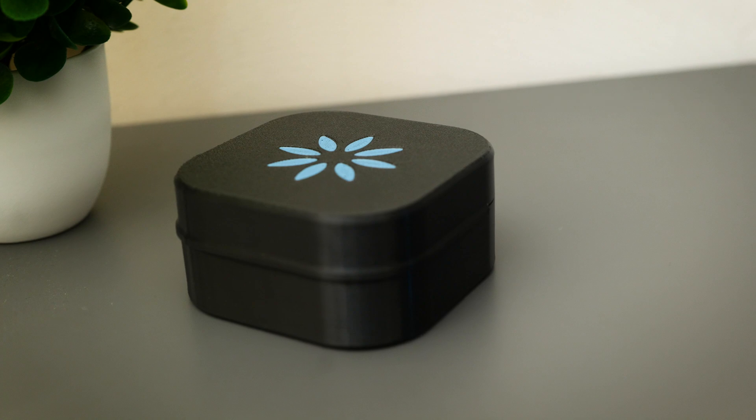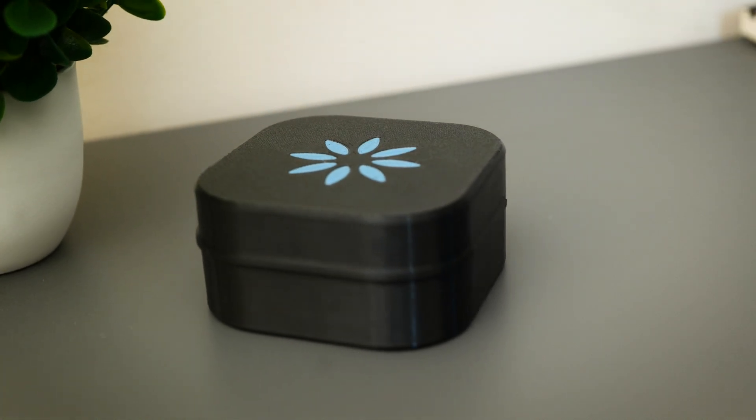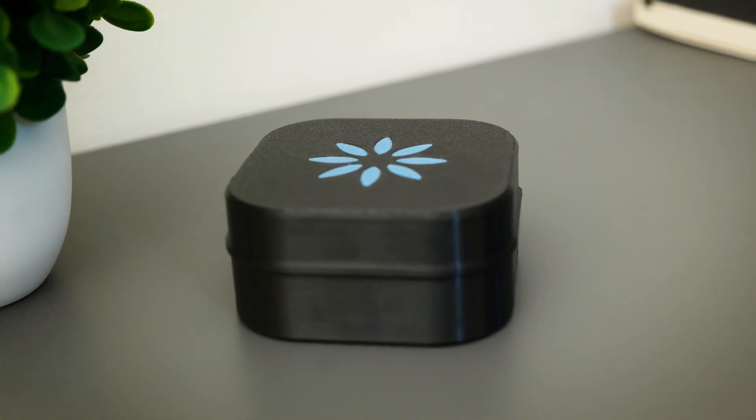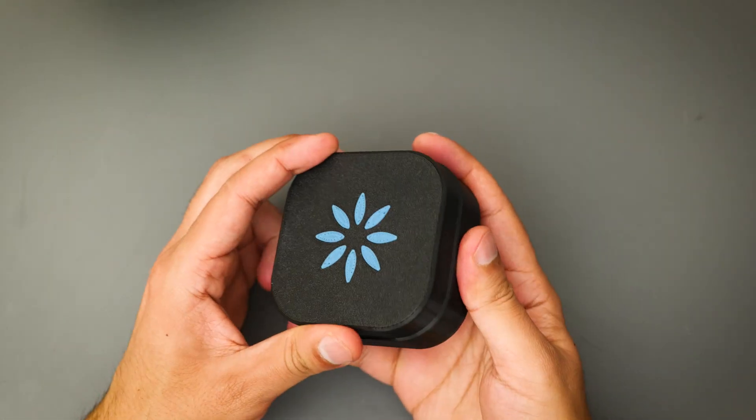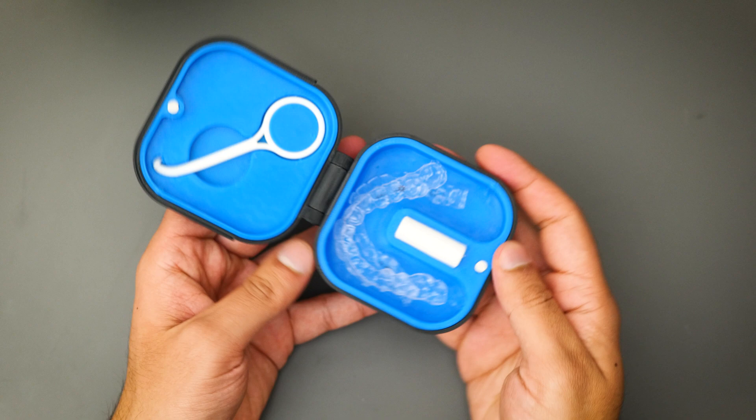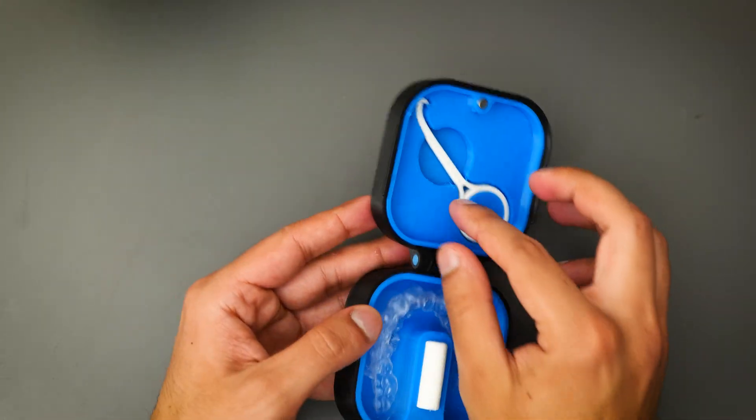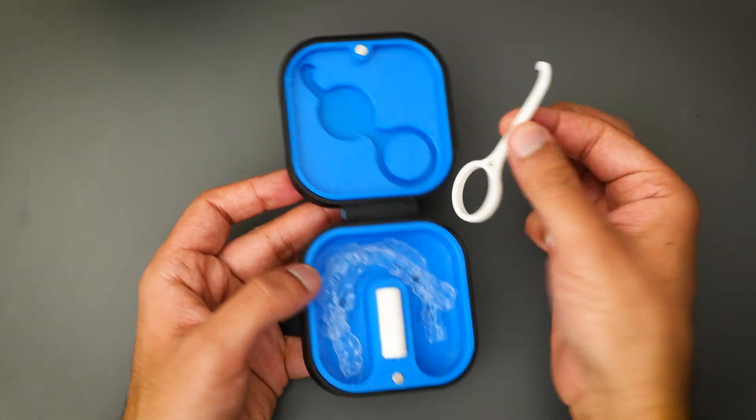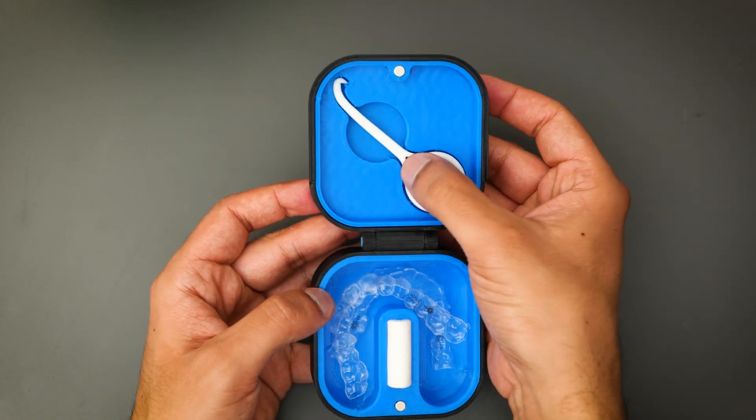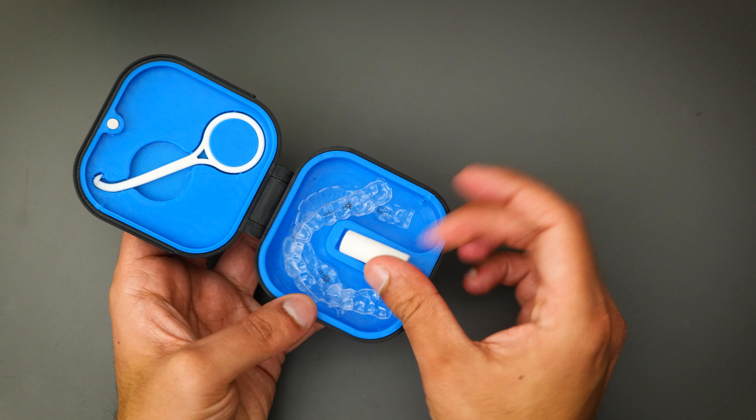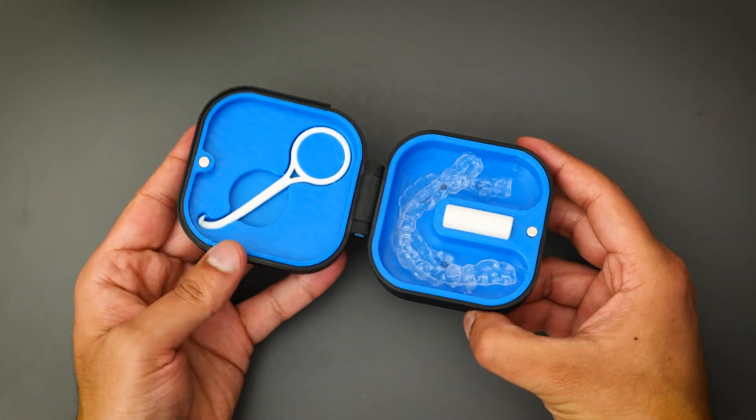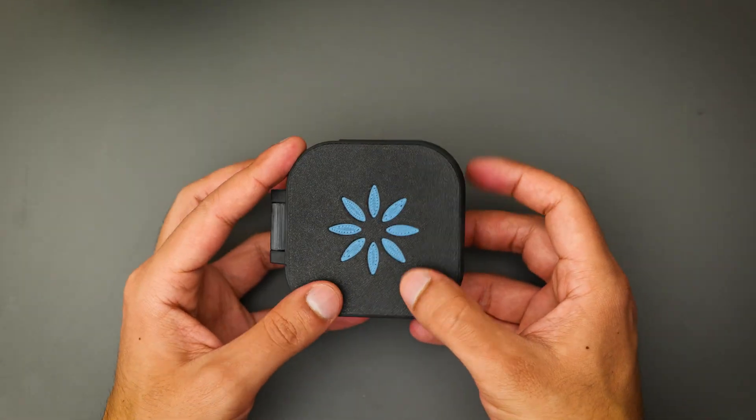So in this video I'm going to be sharing with you guys how I made the InvisiKit. It's a complete and compact companion for anyone having clear aligner treatment. It's got a dedicated space for almost any aligner size, a space for a Chewy and also a removal tool. It's also got a couple of magnets to help close the lid and it gives that nice satisfying noise. So let's get into it.